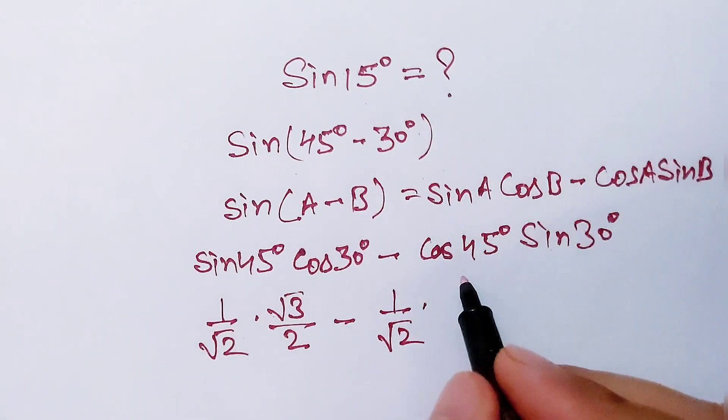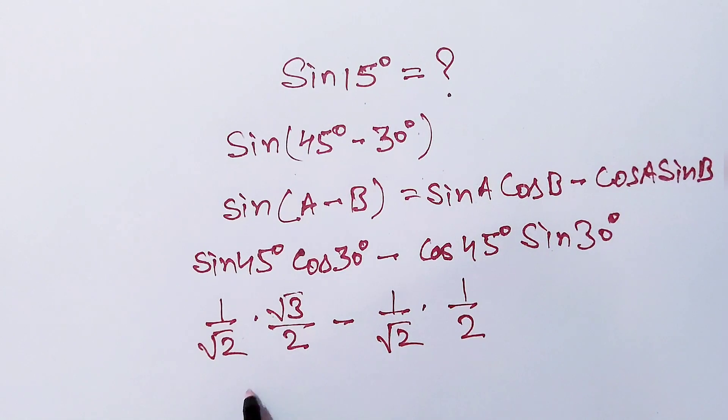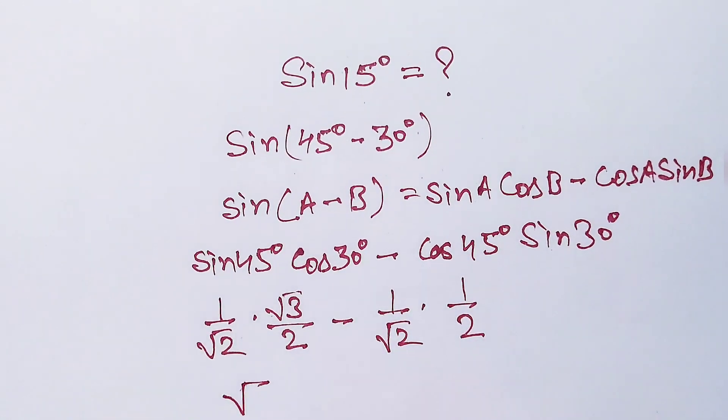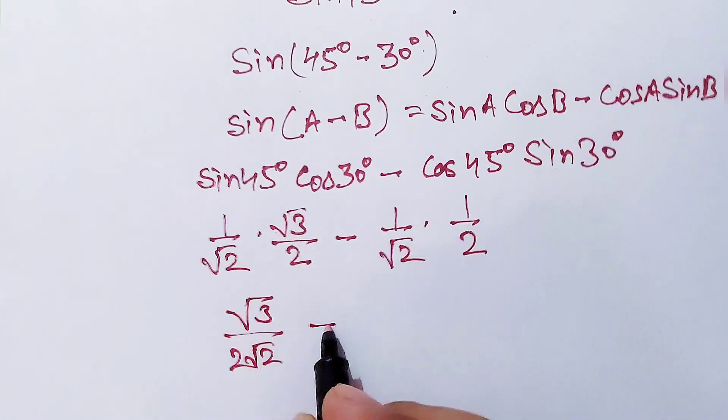Now multiplying these values, what I get is root 3 over 2 root 2 minus 1 over 2 root 2.